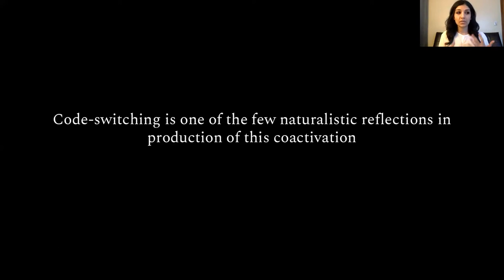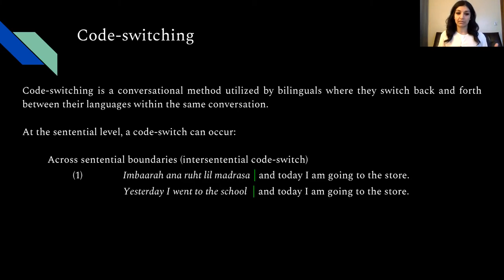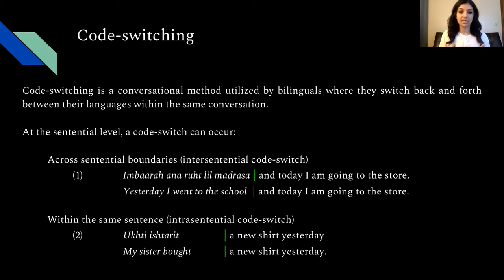Code switching serves as one of these few naturalistic reflections of this co-activation, at least in production. Code switching is the conversational method utilized by bilinguals where they switch back and forth between their languages within the same conversation. At the sentential level, a code switch can occur across sentential boundaries — intersentential code switching — as in example one, where two clauses are conjoined and go from Arabic to English, or within the same sentence — intrasentential code switching — as in example two, where the switch occurs within the VP between the verb and the direct object.